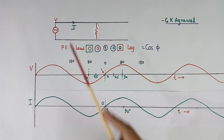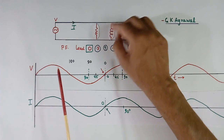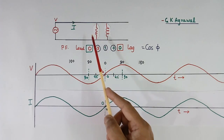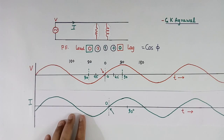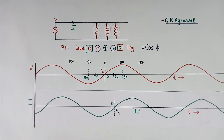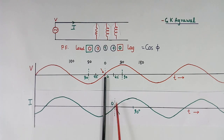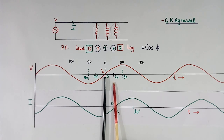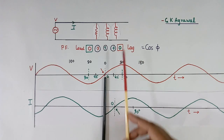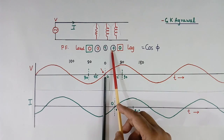Now here there was only resistive load. If I connect one more load — an inductor — then current here will increase because there are 2 currents. One more thing will happen: this current will shift to the right side. If I put some more inductive load, then current will shift further right. Now you see here — this is the voltage zero crossing, this is the current zero crossing, and the angle between these two is 45 degrees. This angle is called the phase angle. Cos 45 is equal to 0.7, so at this point power factor is 0.7 lagging.